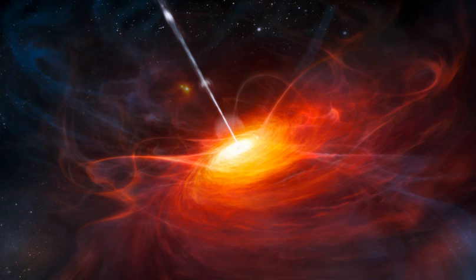The matter accreting onto the black hole is unlikely to fall directly in, but will have some angular momentum around the black hole that will cause the matter to collect into an accretion disk.